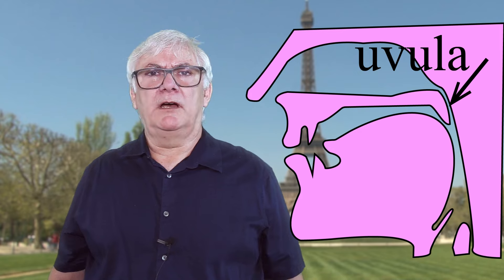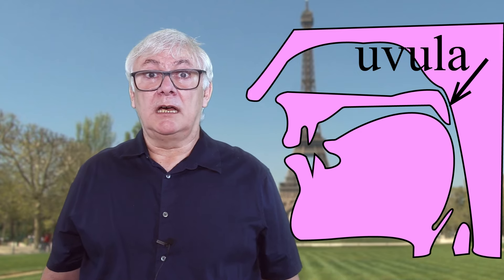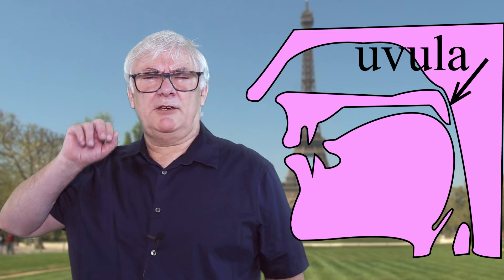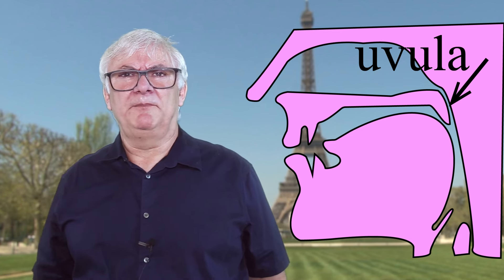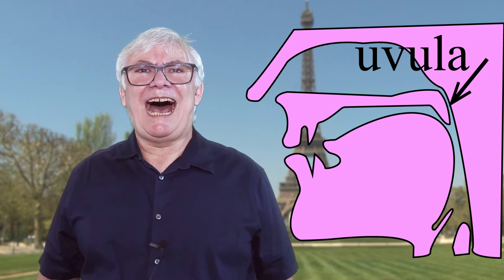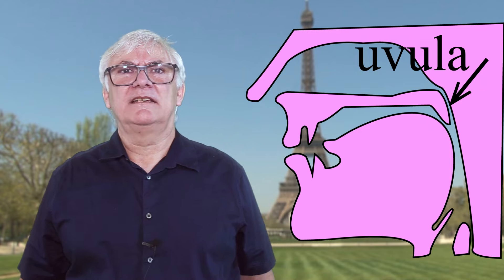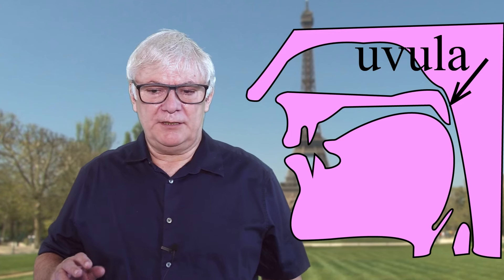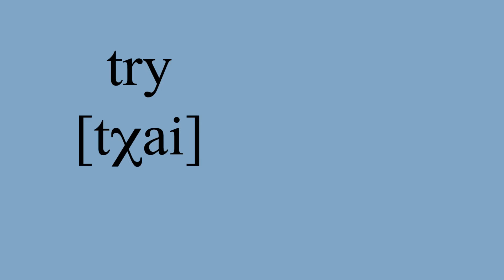Normally it is more of a soft R — just the tongue moving close to the very back of the mouth, the uvula. Like this: 'run, rabbit run.' After a voiceless consonant, the R becomes more friction — so for example, 'tri,' 'trifle,' 'triumph.'